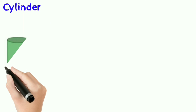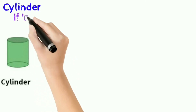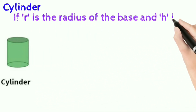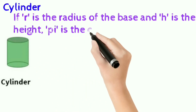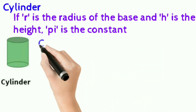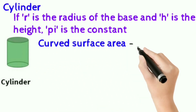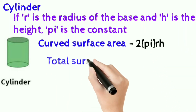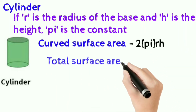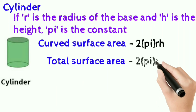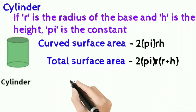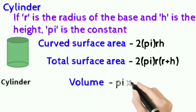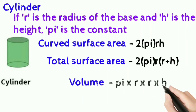Cylinder: if r is the radius of the base, h is the height, and pi is the constant, curved surface area is 2πrh; total surface area is 2πr into (r plus h); and volume of the cylinder is πr squared times h.